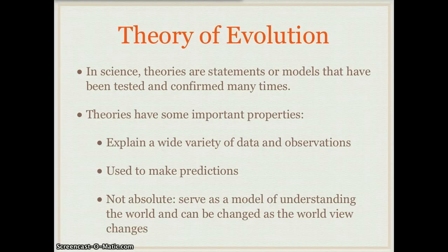Theories have some very important properties. Theories are able to explain a wide variety of data and observations. The theory of evolution takes into account data and observations from fossils, from today's anatomy, biochemistry — there are a lot of different observations that come into the theory of evolution.